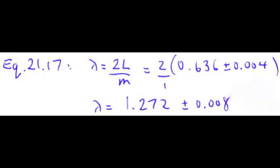Looking further down at the solutions, equation 21.17, which is for either an open-open or a closed-closed tube, so we have closed-closed. You have the wavelength is 2L divided by m. m is 1 in this case, so it's just twice the length. We've measured the length of the tube to be 0.636 plus or minus 0.004 meters. So multiplying that out, you get 1.272 plus or minus 2 times that error, since you're multiplying by an exact number 2, 0.008 meters. And that is a correct answer.